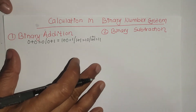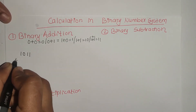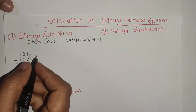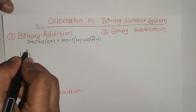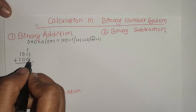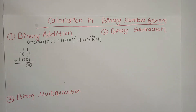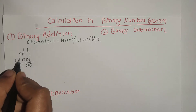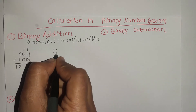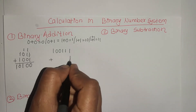When we perform addition, let's take the example: 11 plus 1001. So 1 and 1 gives 10, so we write 0 and carry 1. Then 1 and 1 again gives 10, and with 0 and 1, we get 1101.